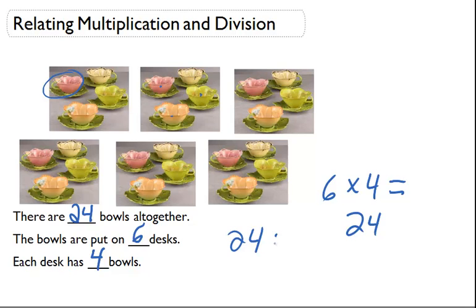And we know that if we divide it by the number of bowls that are on each desk, which is 4, that we have here, we're going to get 6.